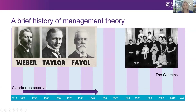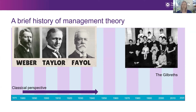Scientific management emphasizes scientifically determined jobs and management practices as the way to improve efficiency and labor productivity. In the late 1800s, a young engineer, Frederick Winslow Taylor, proposed that workers could be retooled like machines — their physical and mental gears recalibrated for better productivity.